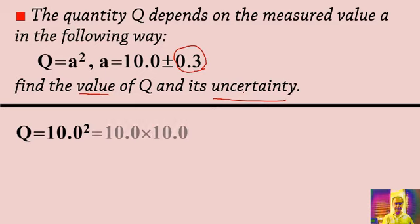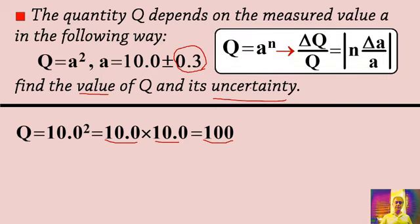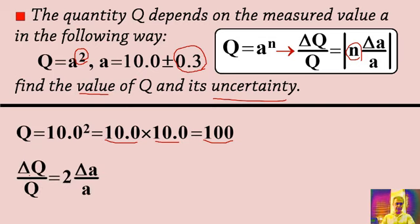I rewrite it as 10 times 10. Pay attention: mathematically the answer is 100, and physically it is the same because every term here has three significant figures, so the answer must have three significant figures. Now applying the general rule — q equals a to the power of n, so delta q over q equals n times delta a over a. Here n is evidently 2, so delta q over q is equal to 2 times delta a over a.